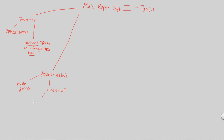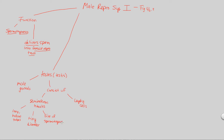Seminiferous tubules are essentially very long and hollow tubes with a tiny diameter. Why are they long and hollow tubes? There must be a functional reason for this type of structure, and that is because this is going to be our major site of spermatogenesis. The seminiferous tubules are the start of and the site of the majority of spermatogenesis — the birth of sperm. That's definitely the function seen in the seminiferous tubules.